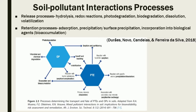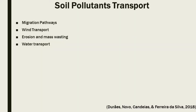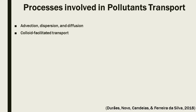Figure 2.3 shows processes determining the transport and fate of PTS and OPS in soils. Soil pollutant transport is dependent on migration pathways: wind transport, erosion and mass wasting, and water transport. The processes involved in pollutant transport are advection, dispersion, diffusion, and colloid-facilitated transport.